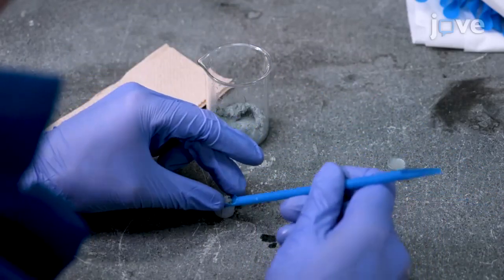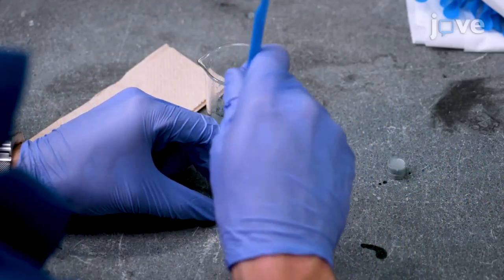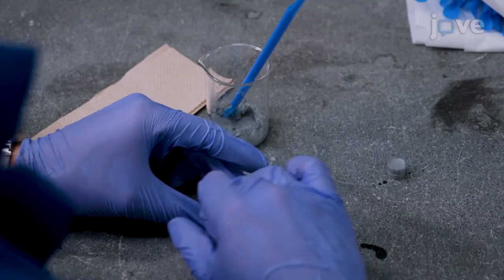Portion the zinc paste into polypropylene molds of approximately 10 millimeter diameter and 5 millimeter height to air dry the paste overnight.